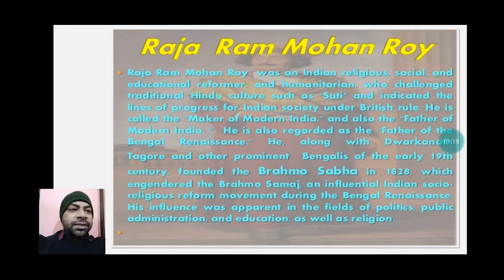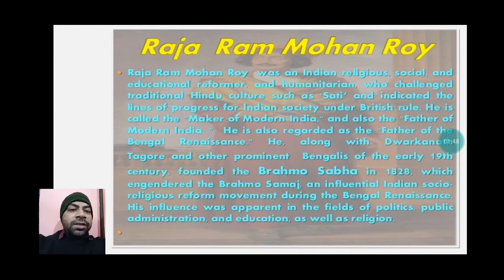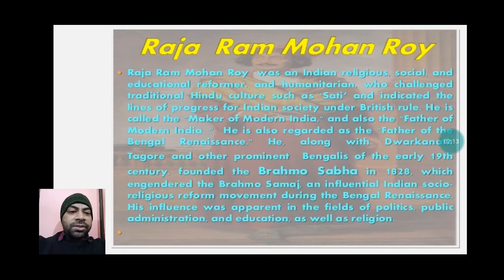One of the evil practices — the Sati system — was also abolished with his help. He did a lot for Indian society under British rule. He is called the 'Maker of Modern India' and also the 'Father of Modern India.' He is regarded as the father of the Bengal Renaissance, which means reawakening. Along with Dwarkanath Tagore and other prominent Bengalis, he founded the Brahmo Sabha in 1828, which later became the Brahmo Samaj — an influential Indian socio-religious reform movement during the Bengal Renaissance.